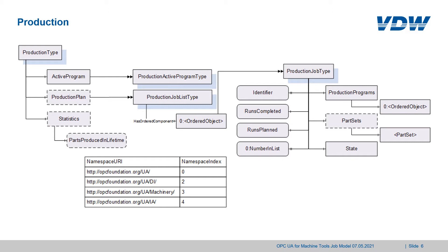On this slide we are looking at the production plan part of the production type. The production plan is a list that contains objects of production job type. The production job type contains an identifier, two nodes called runs completed and runs planned showing how many runs shall be executed and how many have been executed already. It contains the number in list to enumerate jobs in the production plan, a number of production programs, and optionally a list of part sets. It always contains a state, and on the next slide we will have a closer look at it.